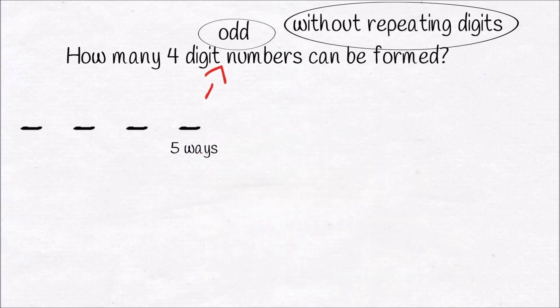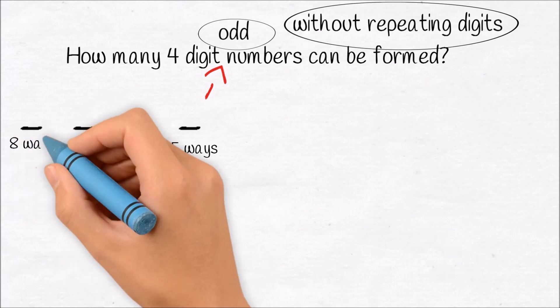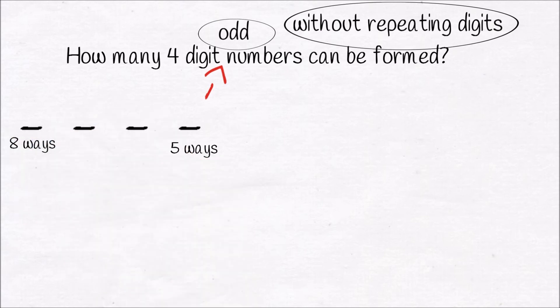First of all, the unit position can be filled in 5 ways. Since 1 digit is used in the units position, we are left with only 9 digits to choose from for the 1000's position. 0 cannot be used. Only 8 digits can fill this position. So the 1000's position can be filled in 8 ways.